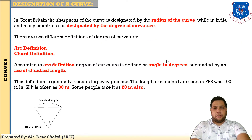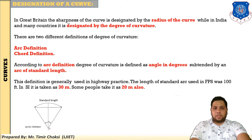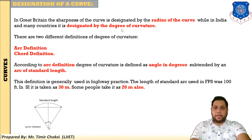Now I will explain the relation between the radius and degree of curve. For better understanding, you first need to understand the designation of the curve. Designation means — just as your designation is student and my designation is assistant professor — the curve's designation has two types, depending upon the arc definition and chord definition. In Great Britain, the sharpness of the curve is designated by the radius of the curve, while in India and many countries, the curve is designated by the degree of curvature. So there are two designations: one is the radius of the curve and the second is the degree of the curve.